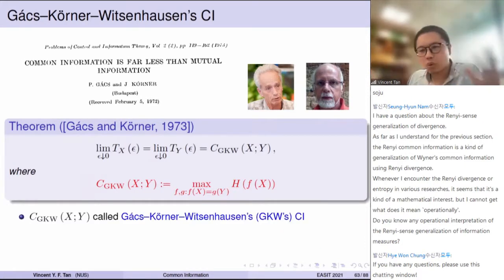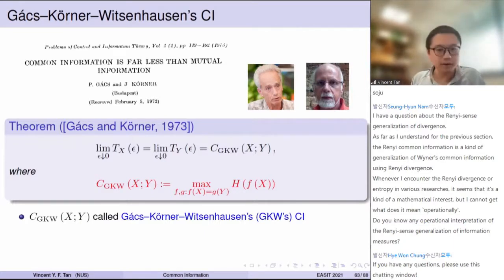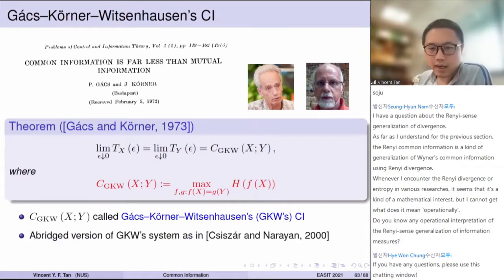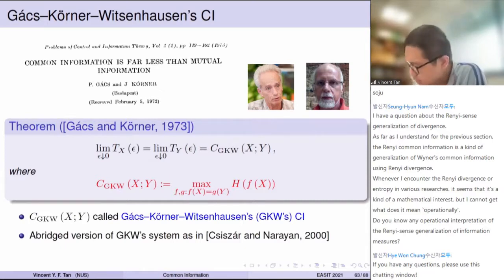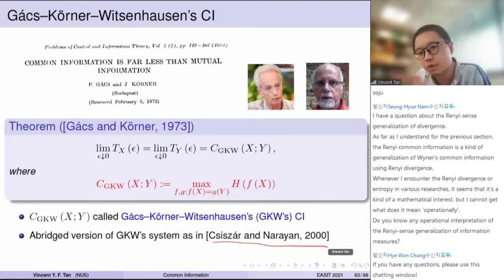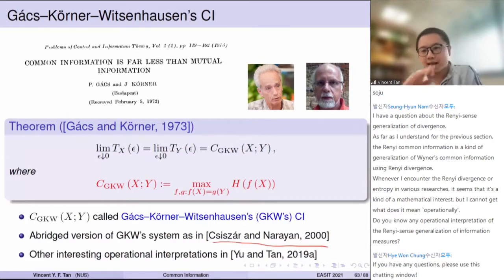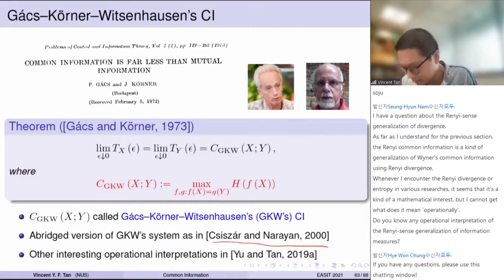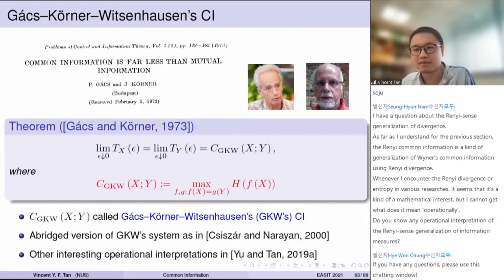This is called Gács-Körner-Witsenhausen's common information — an abbreviated version of Gács and Körner's setup — and it was discussed in the context of secret key agreement, which we will not talk about. There are many other interesting operational interpretations of this, and we studied this in the context of coupling about three years ago. There are many other operational meanings of GKW common information.